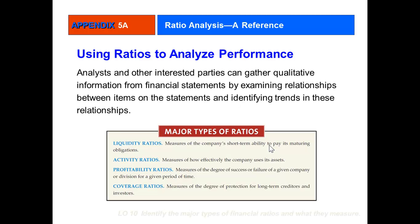First, there are major types of ratios that are used to analyze financial statements' performance. They include liquidity ratios, activity ratios, profitability ratios, and coverage ratios. We're going to look at each of these in a little bit more depth.